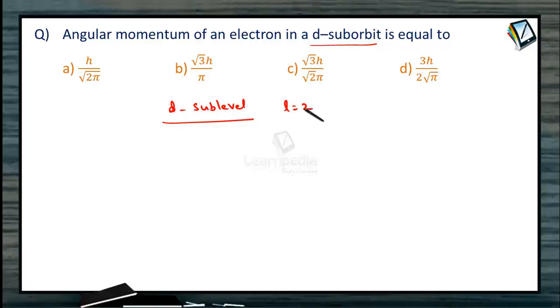Angular momentum = √(L(L+1)) × h/2π. So when L = 2, it is √(2(2+1)) = √6 × h/2π. Therefore this will be the angular momentum.